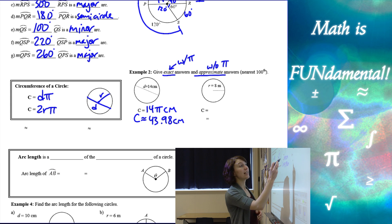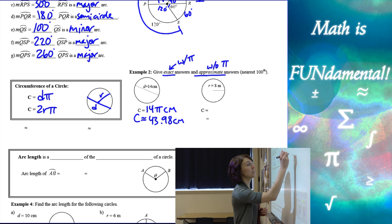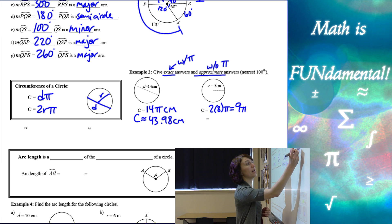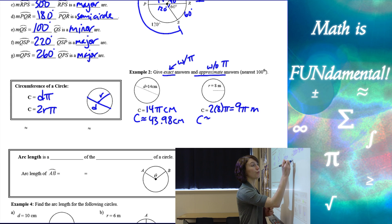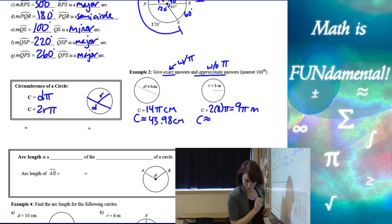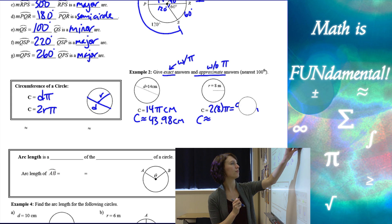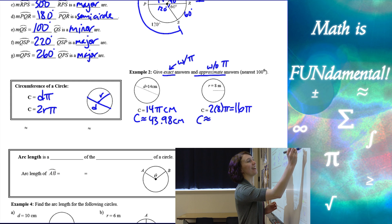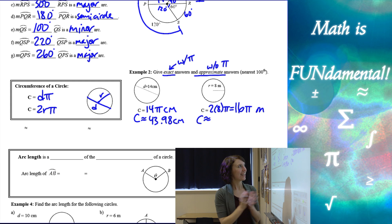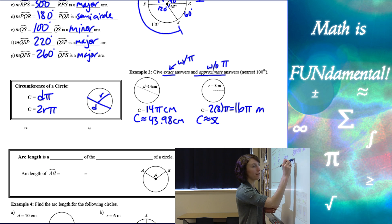For circumference using the radius, we use 2 times pi times the radius. So 2 times 8 is 16, giving us 16 pi meters as the exact answer. Using our calculator to approximate, we get 50.27 meters.